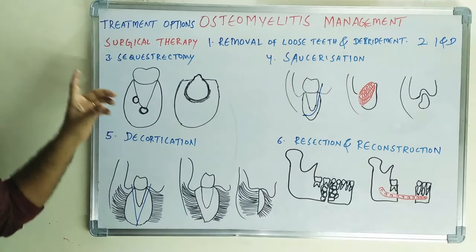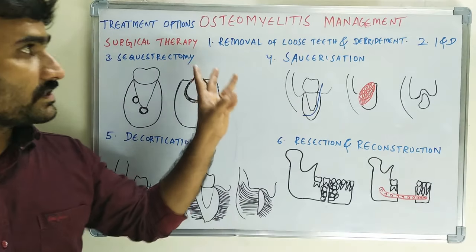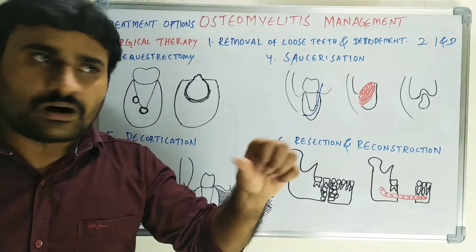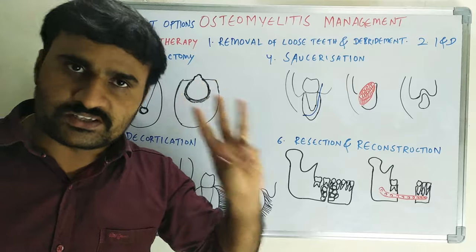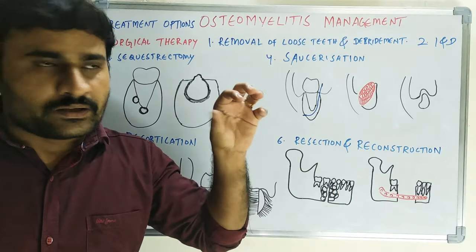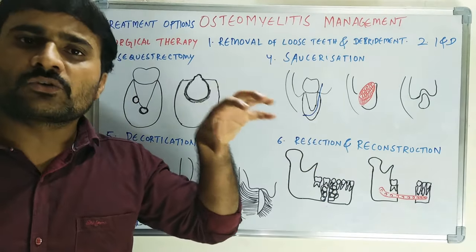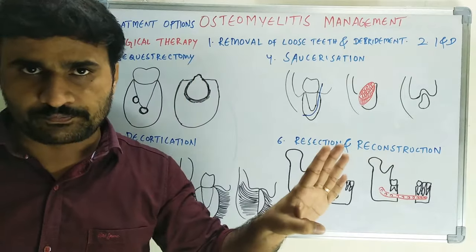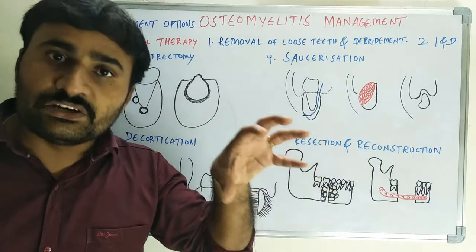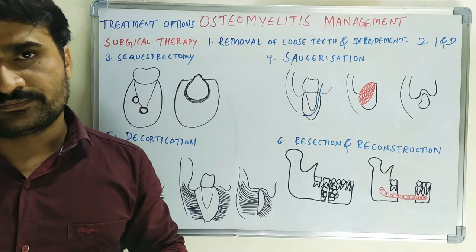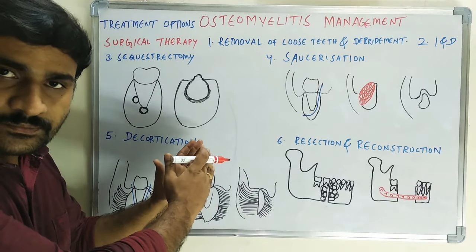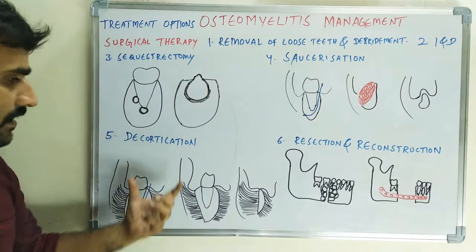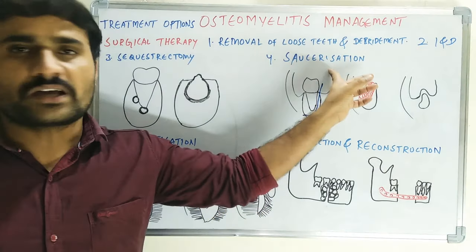The three main important procedures in surgical therapy are sequestrectomy, saucerization, and decortication. The aim of all three is essentially the same — removal of necrotic bone tissue — but the extent and invasiveness of the approach is different. Sequestrectomy is the simplest, saucerization is somewhat more extensive, and decortication is even more extensive than saucerization.